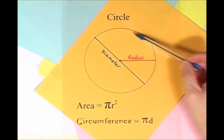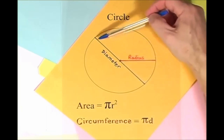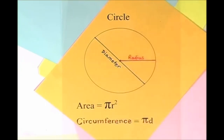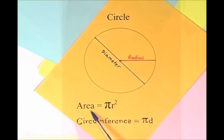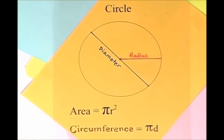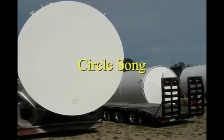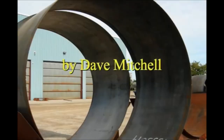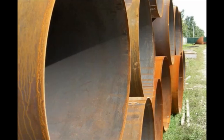Here is a circle, it knows how to get around. It has a radius from center to rim. And its diameter's a line that goes from side to side while passing through the center, now isn't that simple. Pi r squared sounds like area to me, when I need a circumference, I'll just use pi d. Pi r squared sounds like area to me. Here is a circle, it knows how to get around.